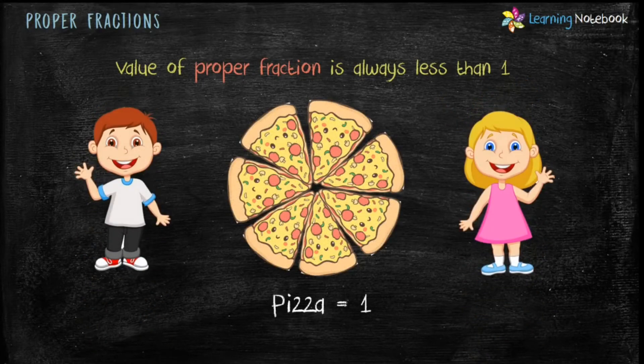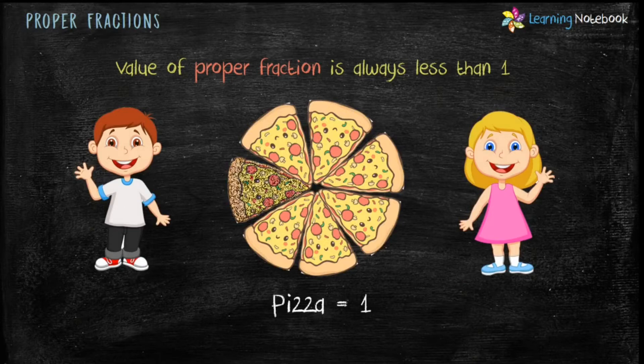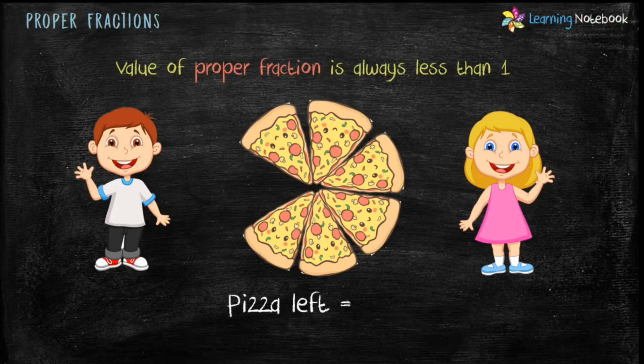Take an example where Rahul and Simran are eating one whole pizza. Now Rahul takes one slice. So what is the fraction of pizza left? It is 6 by 7. As you can see, this is a proper fraction and pizza left is less than 1.